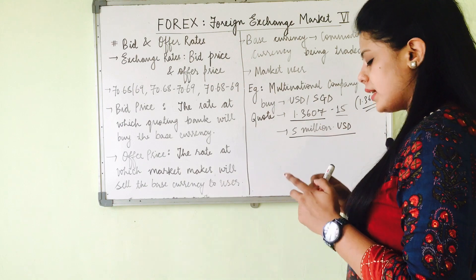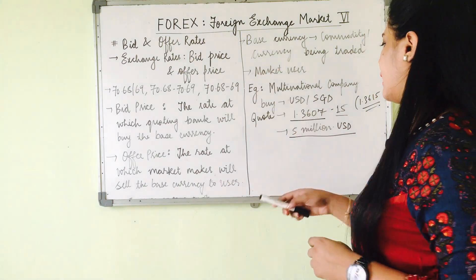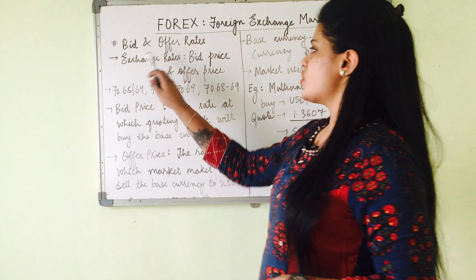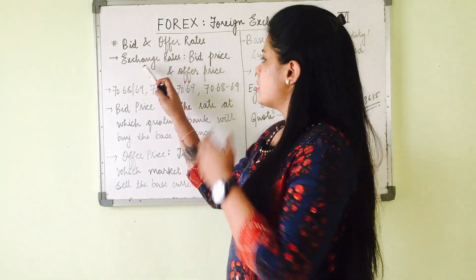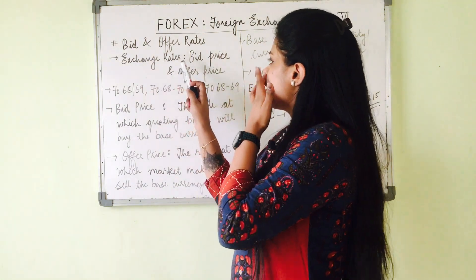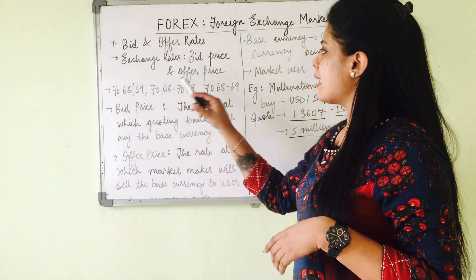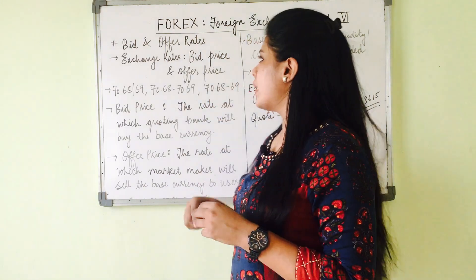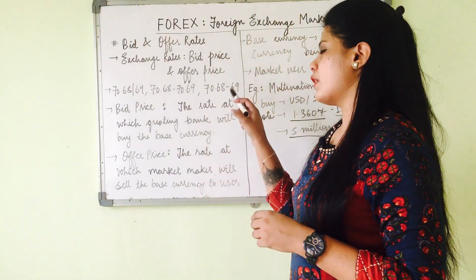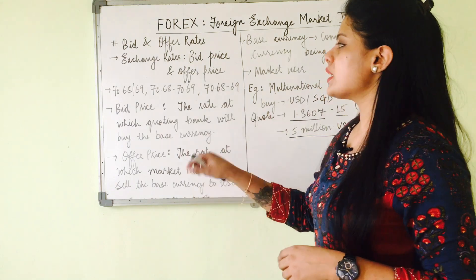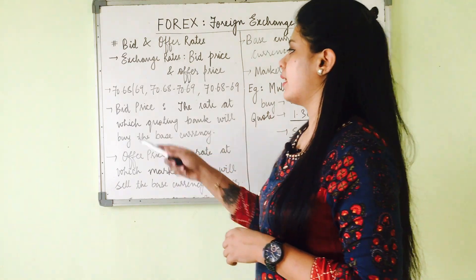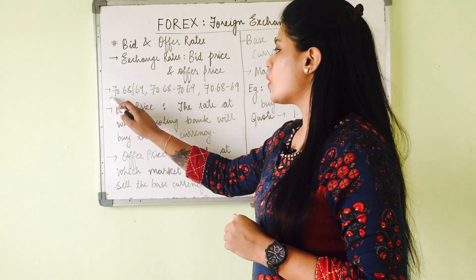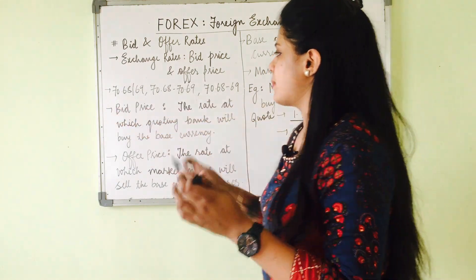The exchange rates are termed as bid price and offer price. Usually, if you see a foreign exchange rate, it is quoted in a standard format. There are typically three ways you will see a foreign exchange rate quoted — for example, 70.689 — and we will see these three types of quoting in the foreign exchange market.